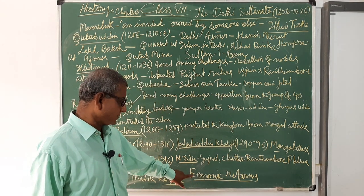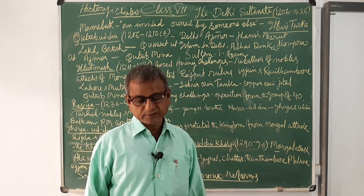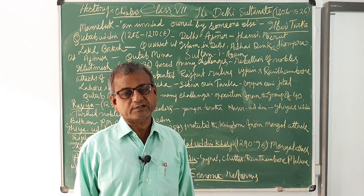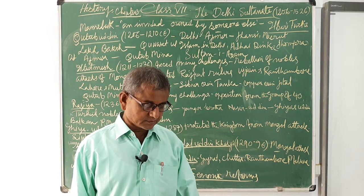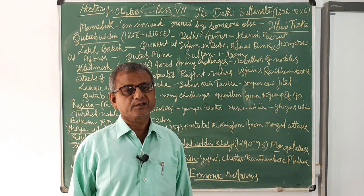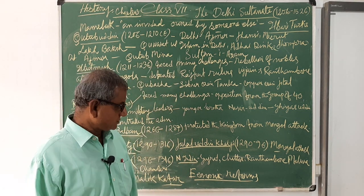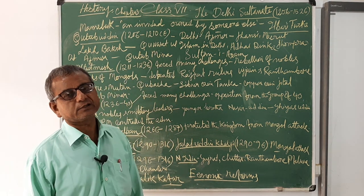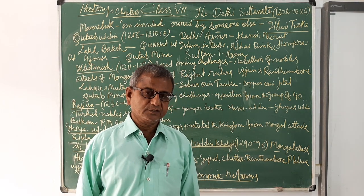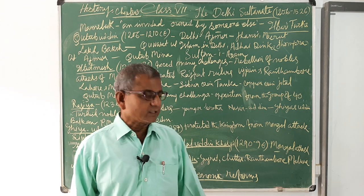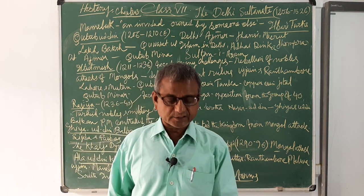Alauddin is chiefly remembered for his economic reforms. During his time, the Mongols attacked several times, but he suppressed them. He raised a huge army, and in order to maintain it, he introduced several reforms. He introduced market regulations — the prices of essential commodities were fixed.